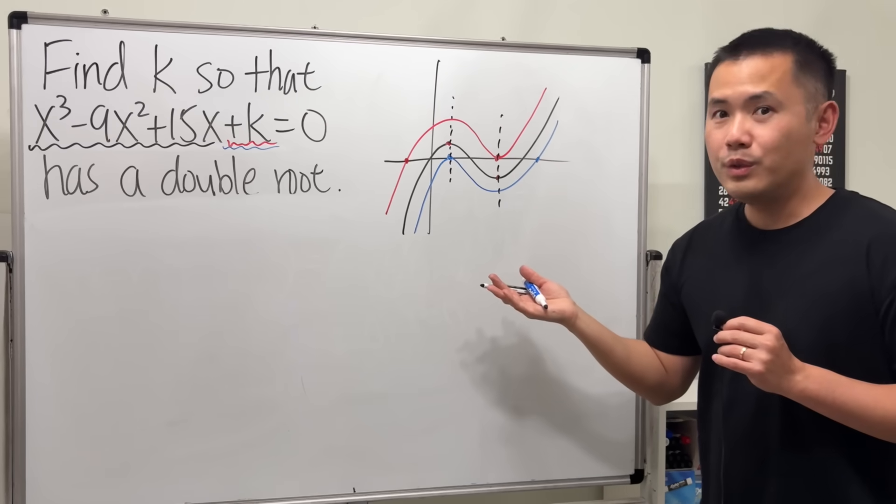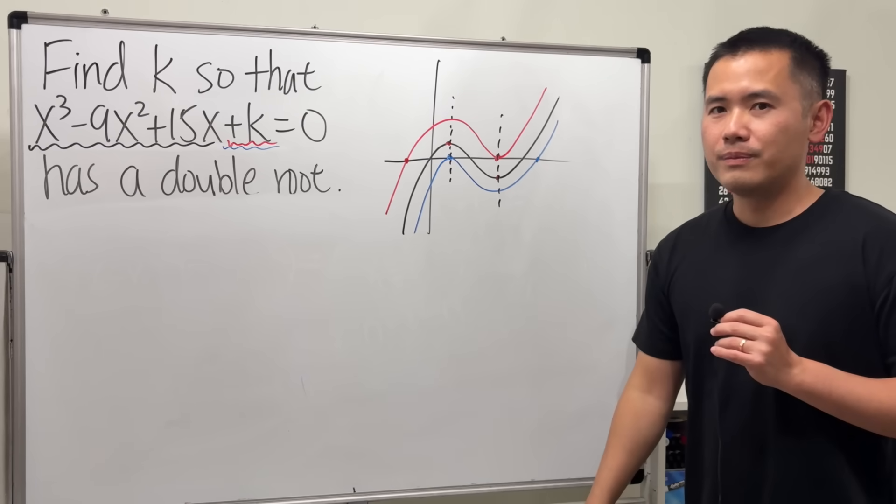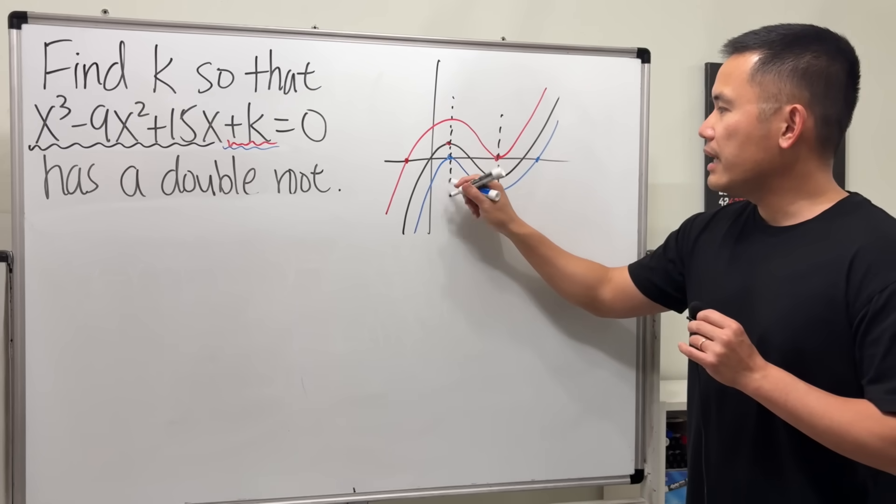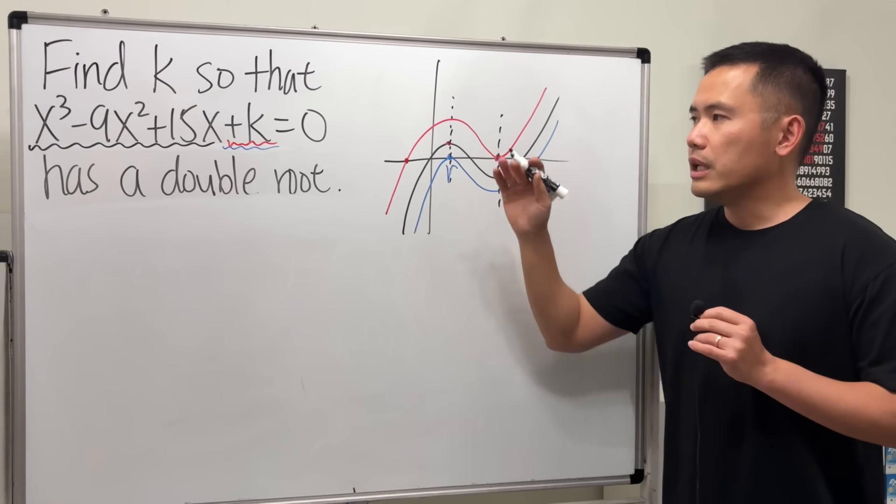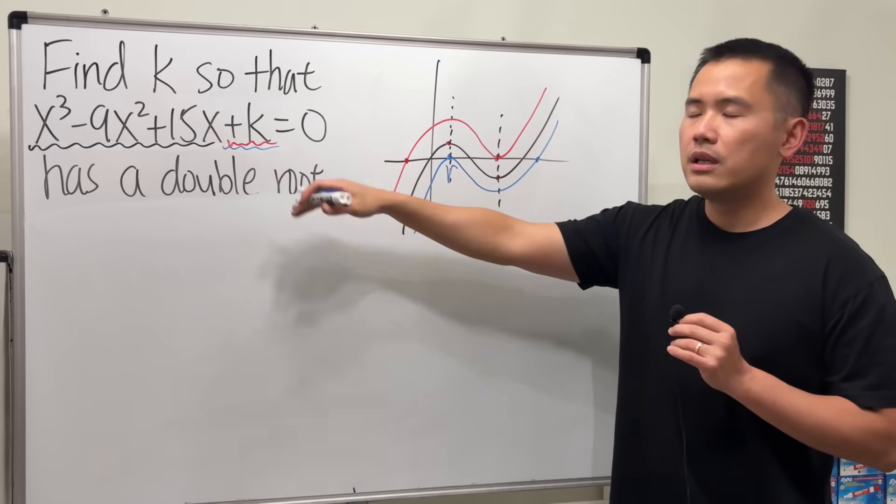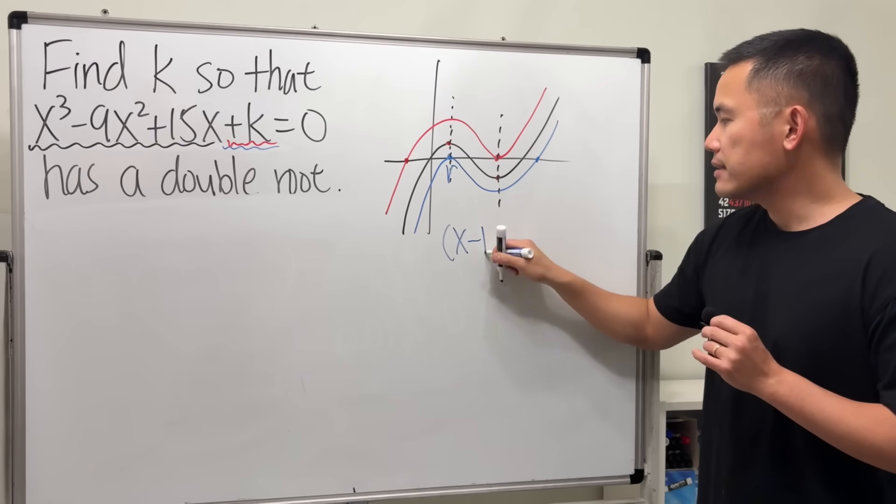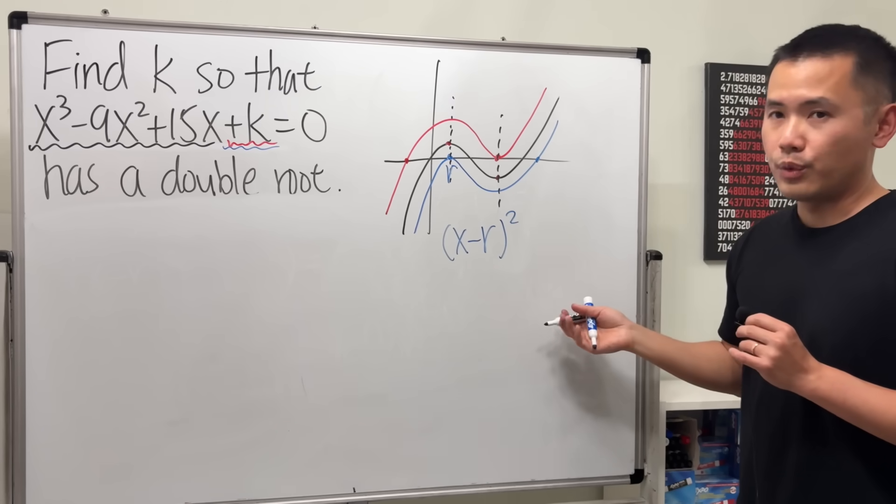As you can see what's happening right here, and this is why this question is very interesting. If you can come up with an algebraic solution for this, then you will be able to find the local maximum and local minimum of the cubic function. Because as you can see, once you get the double root, well it's all about the local min or the local max.